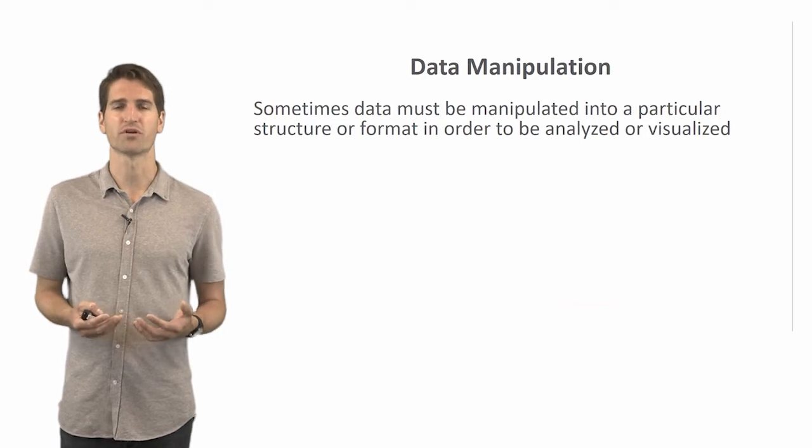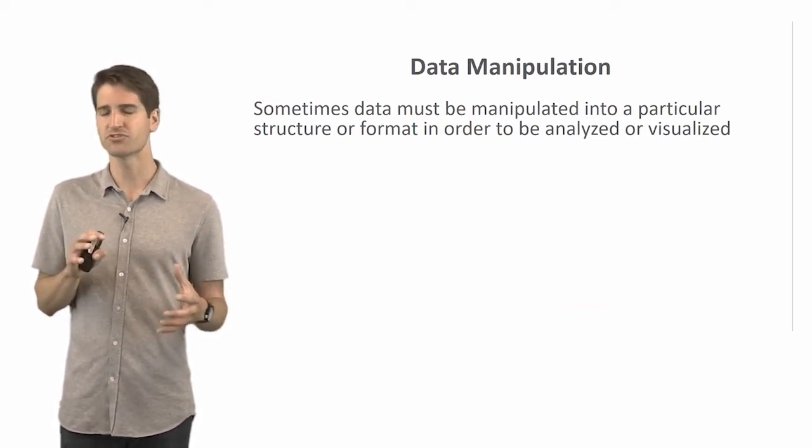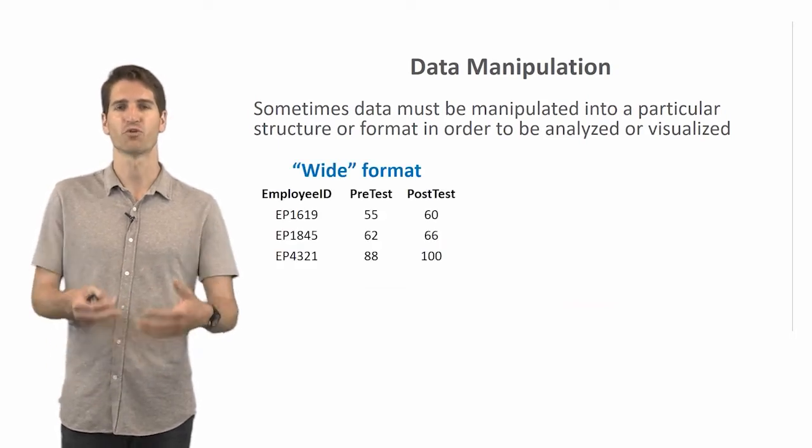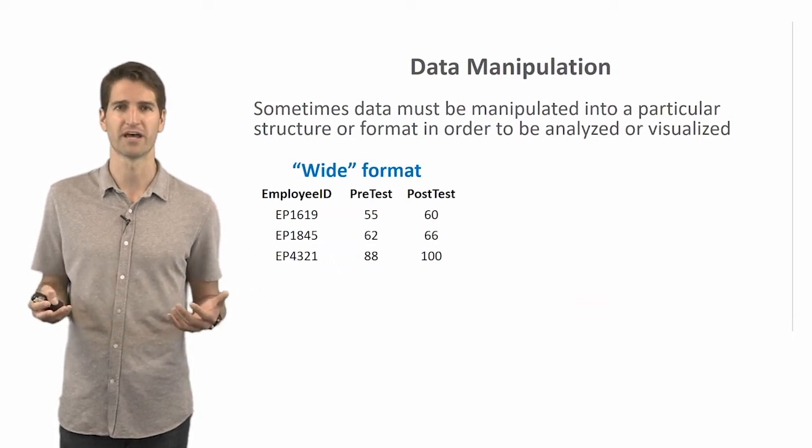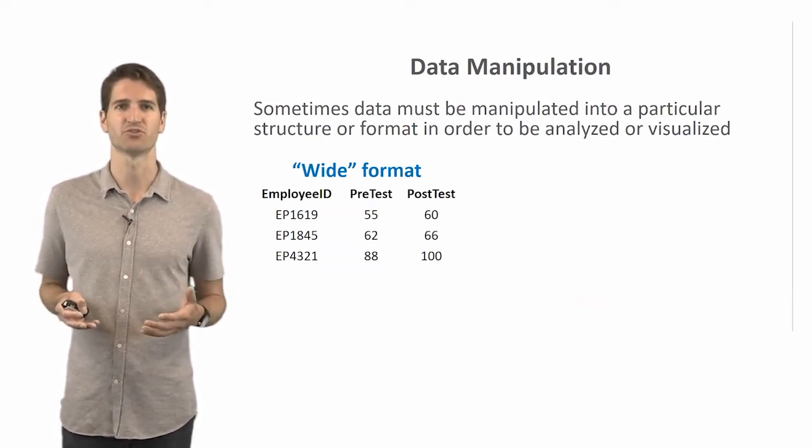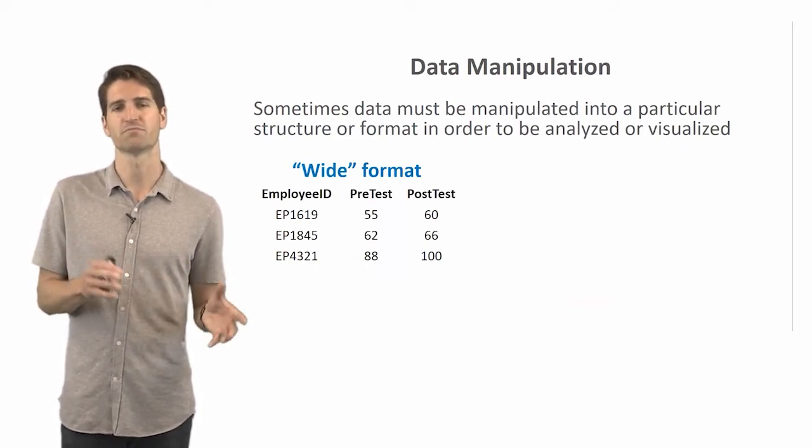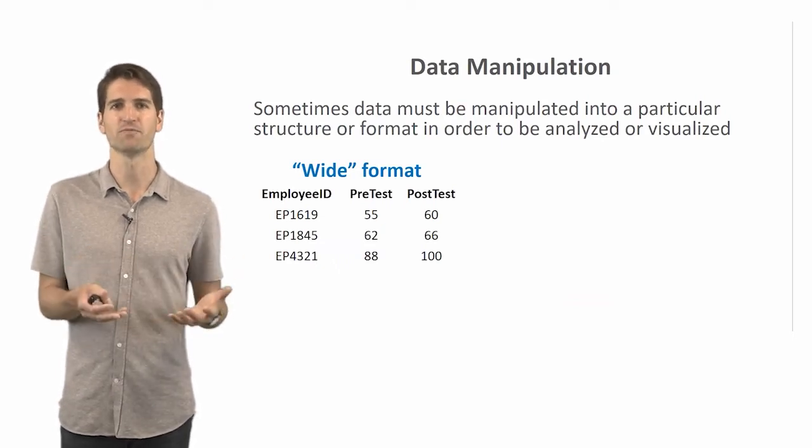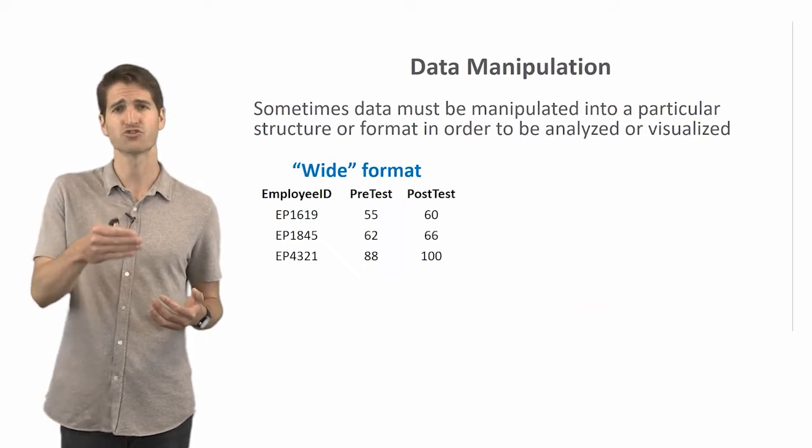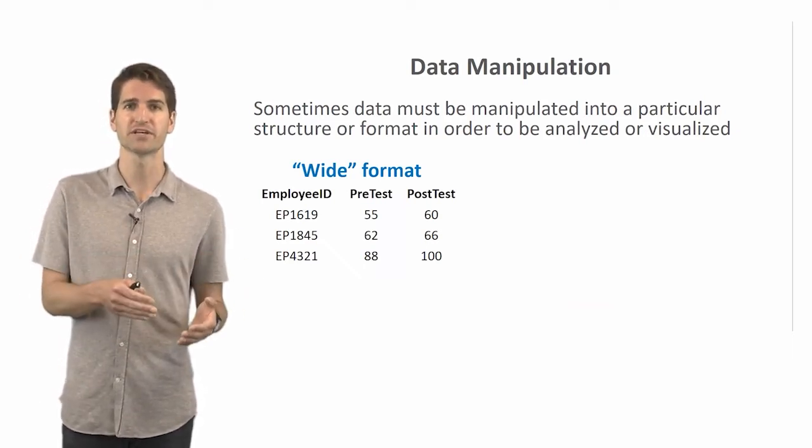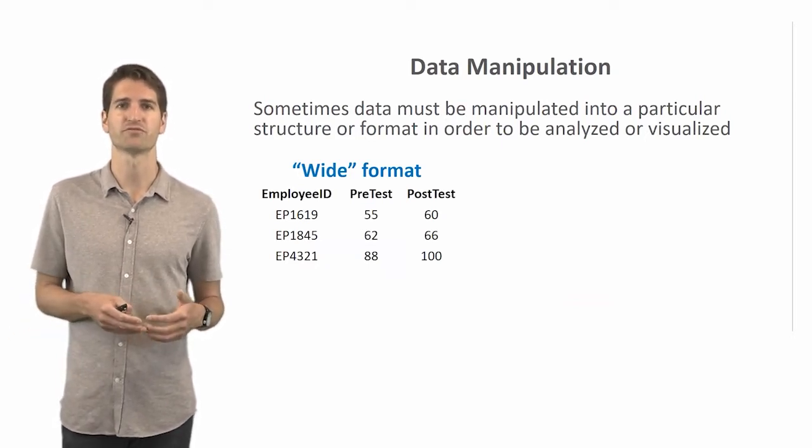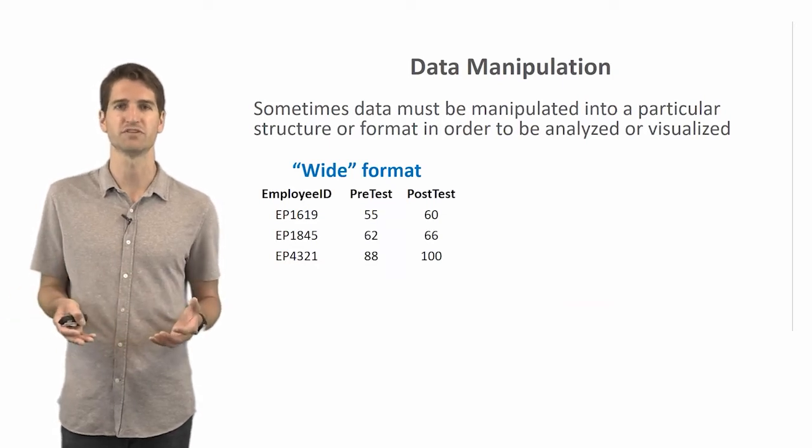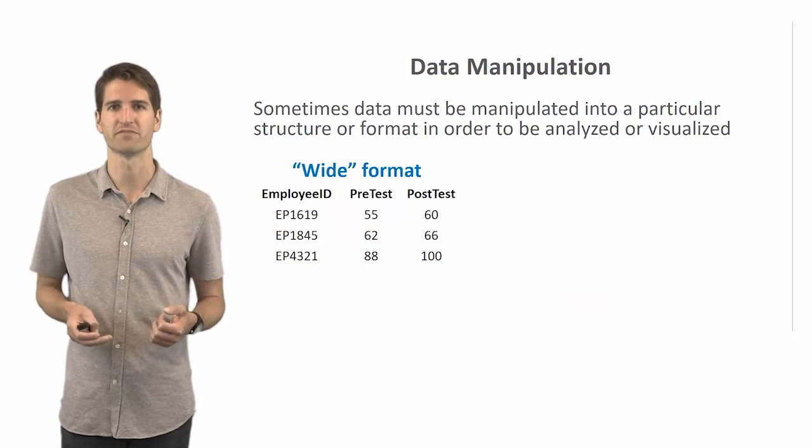Okay, so now let's move on to another important part of data management, which is data manipulation. So, sometimes our data are going to need to be manipulated into a particular structure or format so that we can even analyze or visualize them in the first place. So, commonly if we're working with data, we're often working with it in what's called a wide format. Okay, so let's use the example of this very brief data table here with three different variables or fields representing the pre-test scores and the post-test scores before and after training for these three employees. And so, the way the data are represented is we have our column where we have employee IDs. These are unique identifiers for each employee. Each row represents a unique employee. And then, for each employee, they have a pre-test score, which is in that middle column, and then they have a post-test score. So, for example, for the first employee, which is EP 1619, in terms of their employee ID number, we can see that their pre-test score before training was 55 and their post-test score was 60. So, we can see they increased by five points.